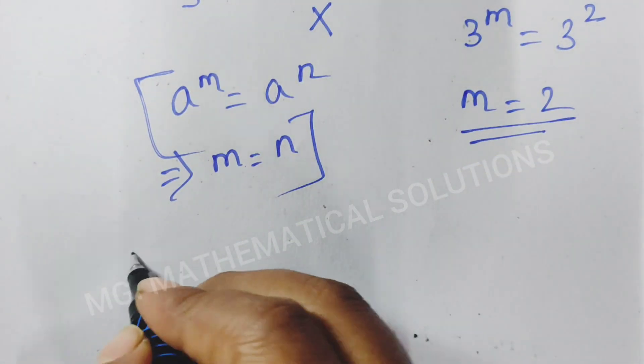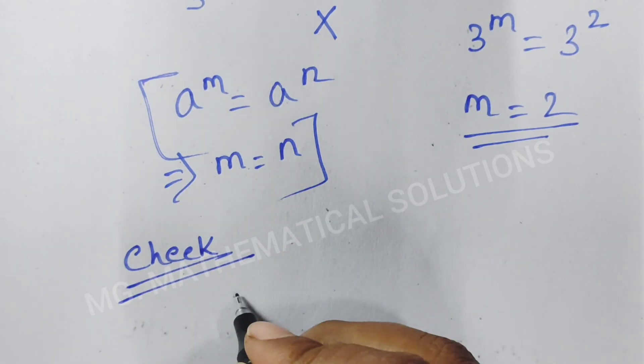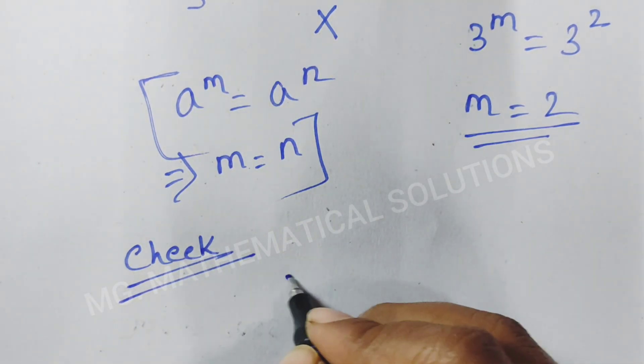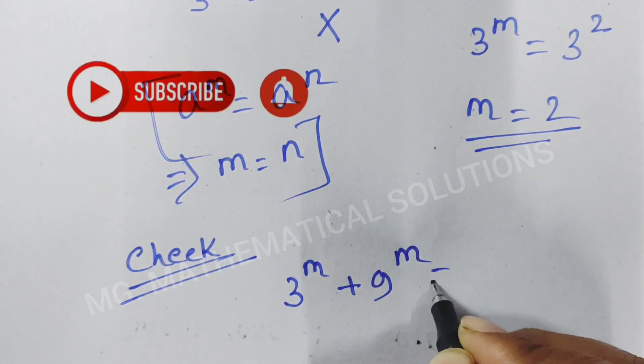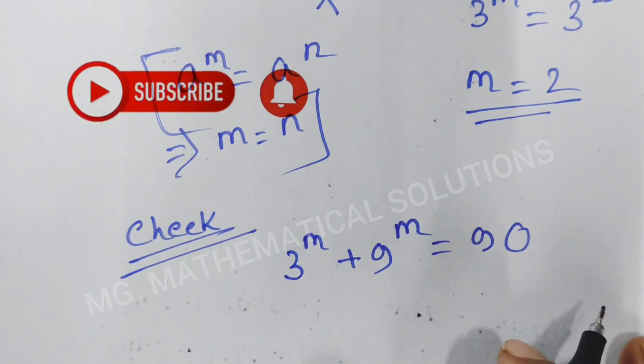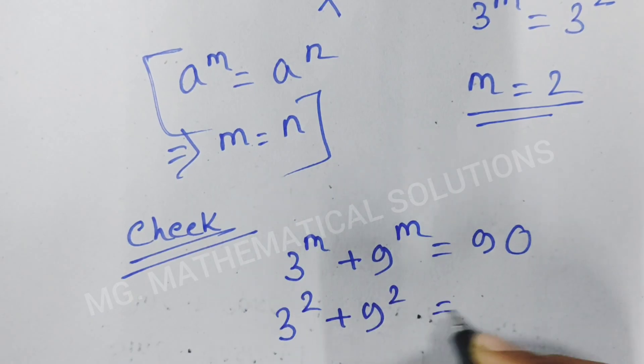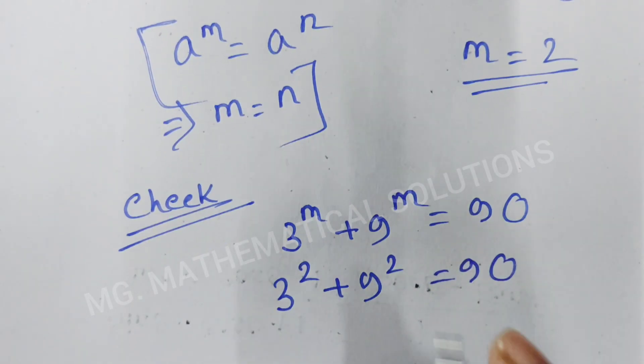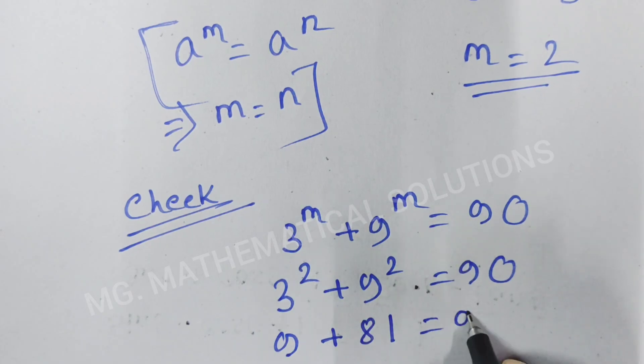Given equation 3 to the power m plus 9 to the power m equal to 90. So, 3 square plus 9 square equal to 90. 3 square means 9 plus 9 square means 81 equal to 90.